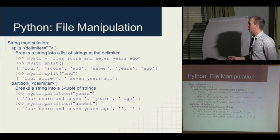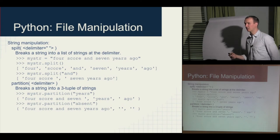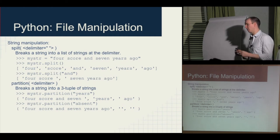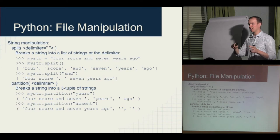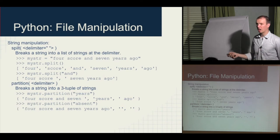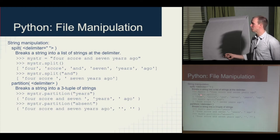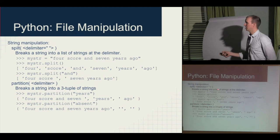One of my favorite functions is split. You can say line.split(delimiter) to split on a specific character. If you had 'abcdefg' and split on 'c', you'd get 'ab' and 'defg'. Or use the default which is whitespace: 'fourscore and seven years ago'.split() gives you a list of ['fourscore', 'and', 'seven', 'years', 'ago'] — one element per word.